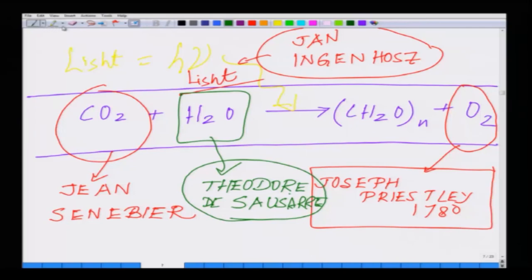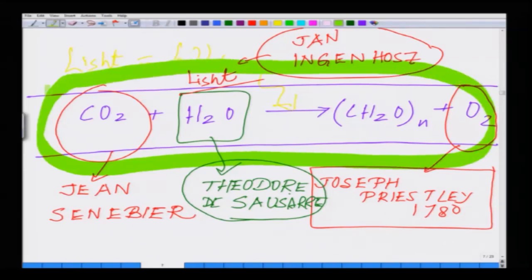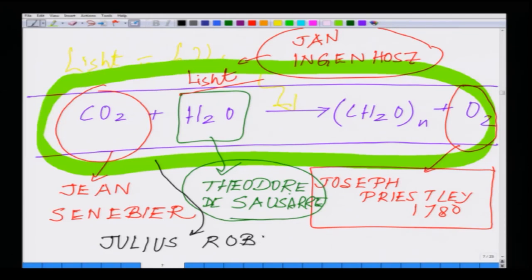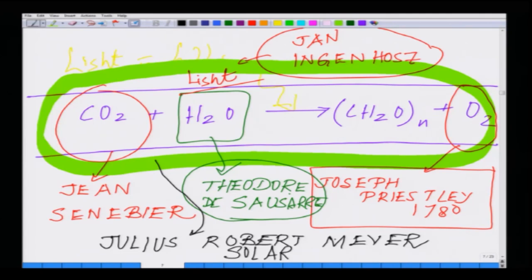The complete picture — that water in the presence of light forms carbohydrates plus oxygen — was put in place by Meyer. This whole transformation of light energy into chemical energy was established by Julius Robert Meyer: essentially solar energy converted to chemical energy. Overall, this is pretty much the scheme of photosynthesis, where carbon dioxide sequestration is taking place.